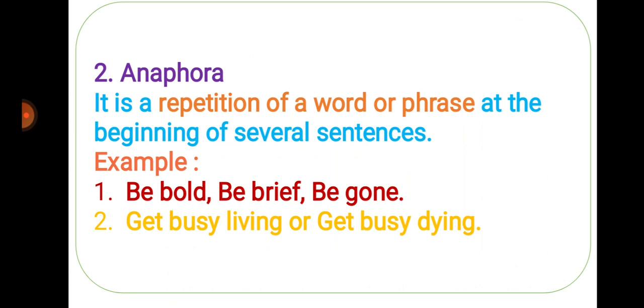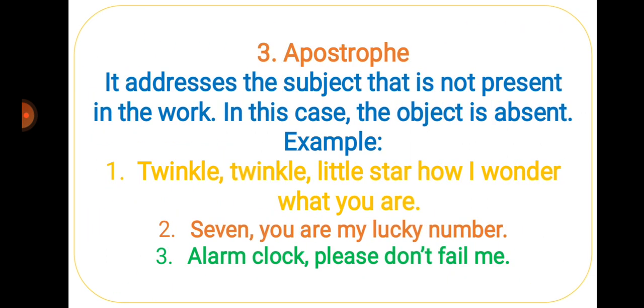Third one is apostrophe. It addresses the subject that is not present in the work. In this case, the object is absent. Example: twinkle twinkle little star, how I wonder what you are. Seven, you are my lucky number. Alarm clock, please don't fail me.